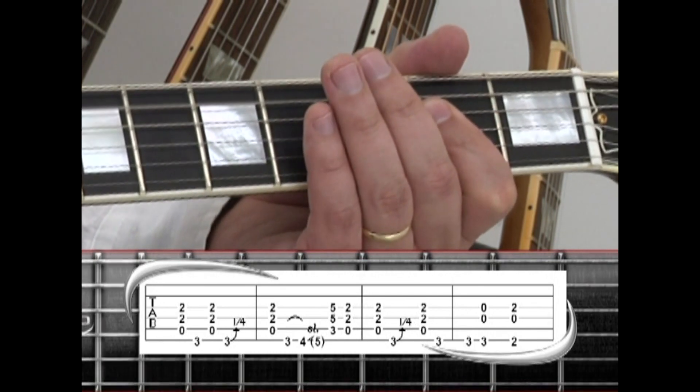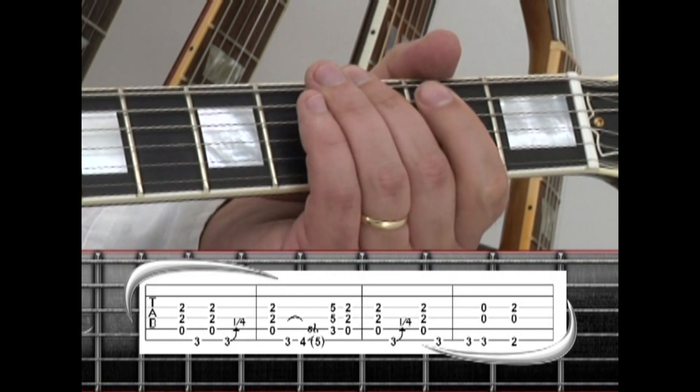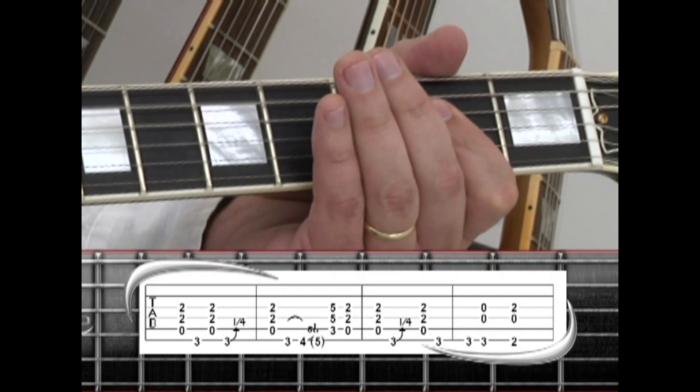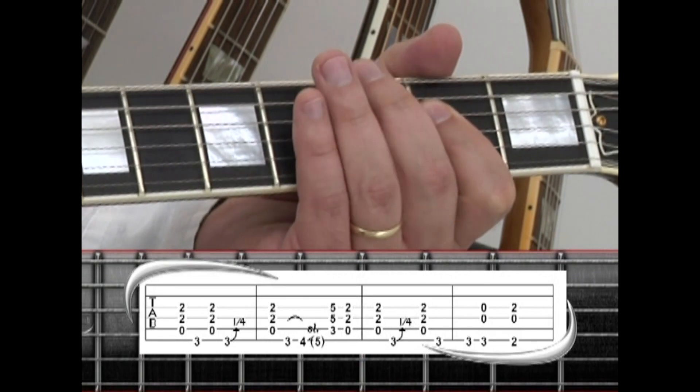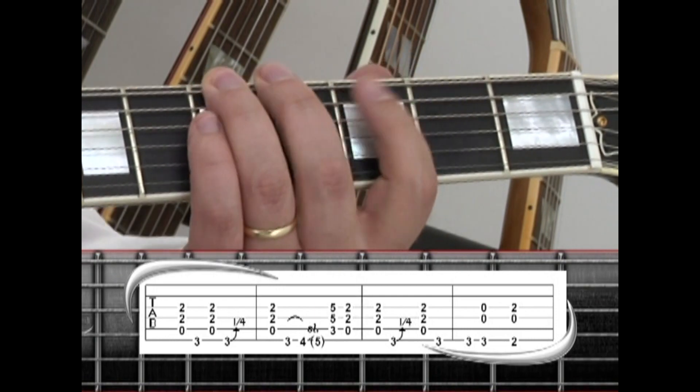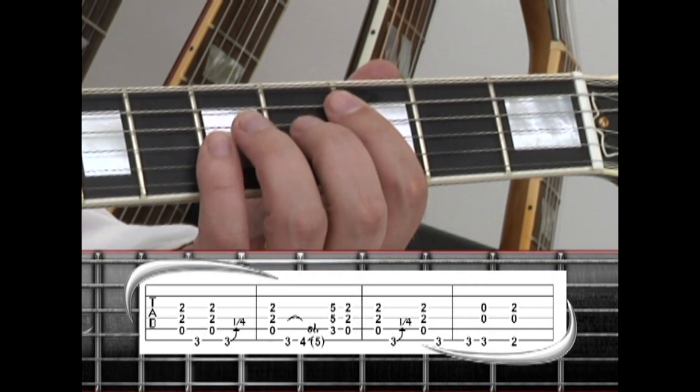A5 again to the G note with a slight bend and a mute. A5 to the 6-string G with the middle, hammer to the 4th fret with the ring, slide up to the 5th fret and quickly change to the C5 chord that we learned earlier.